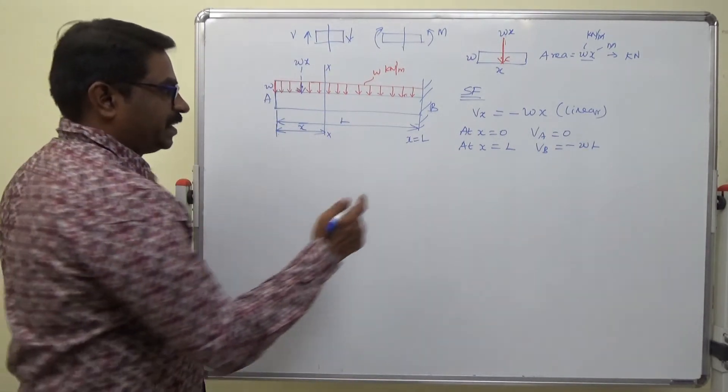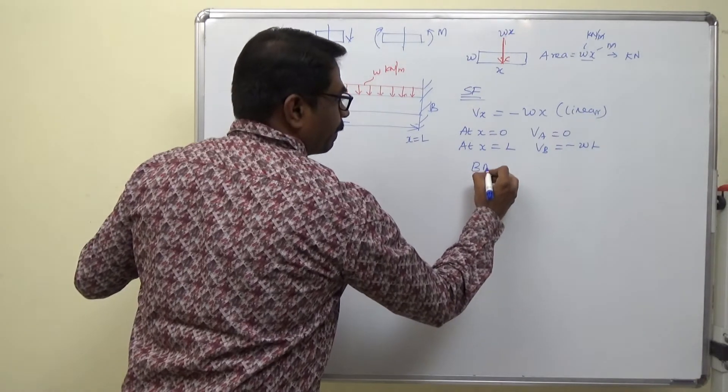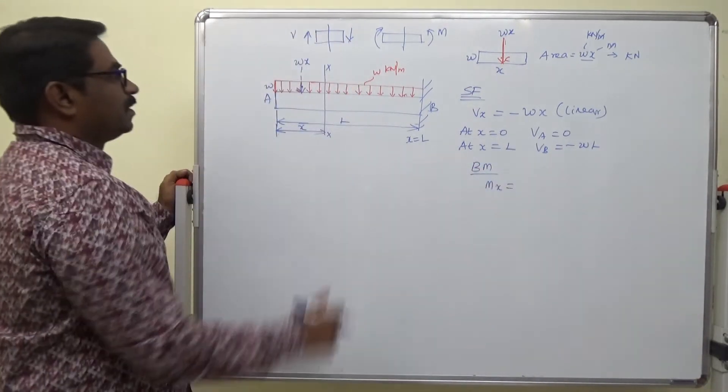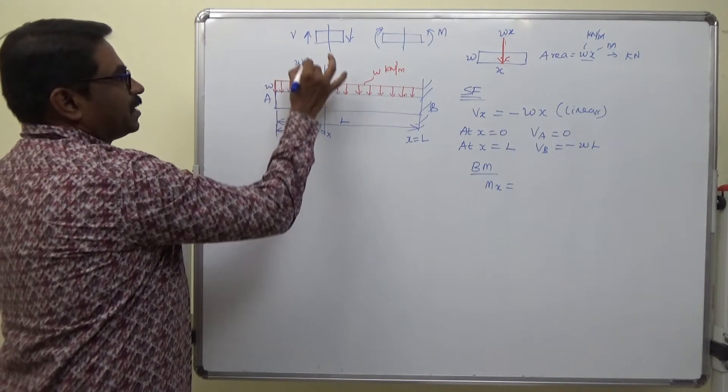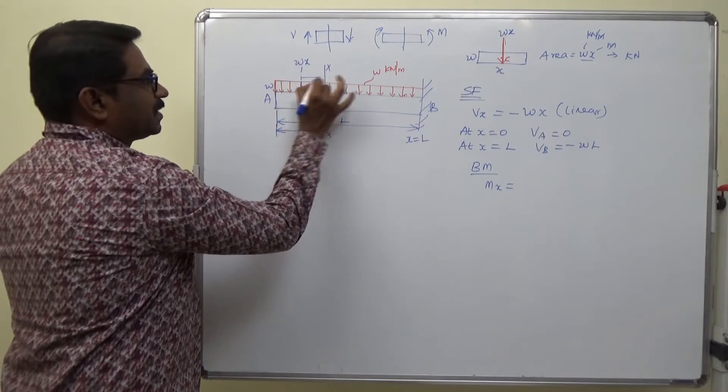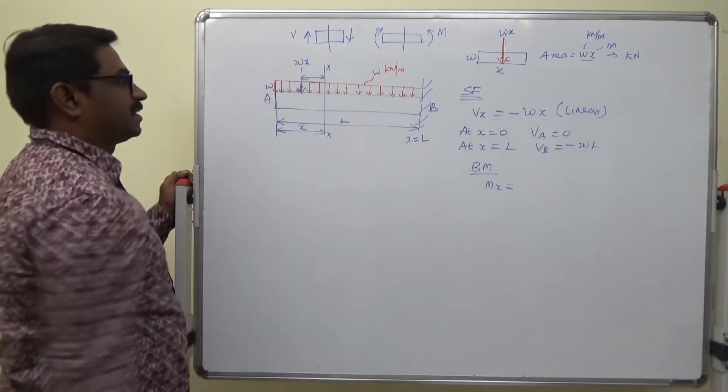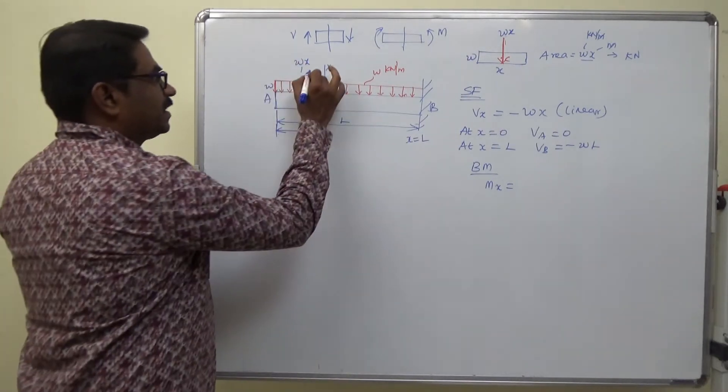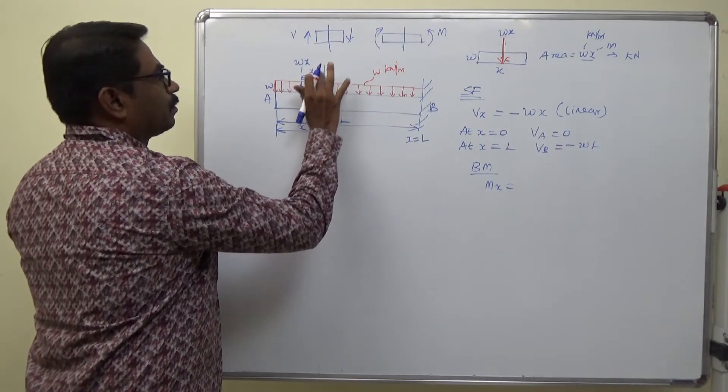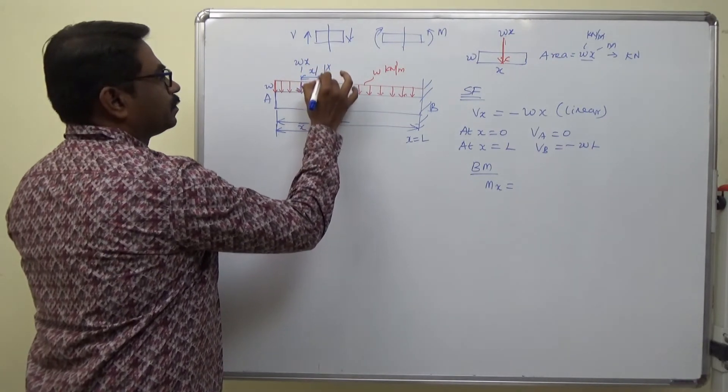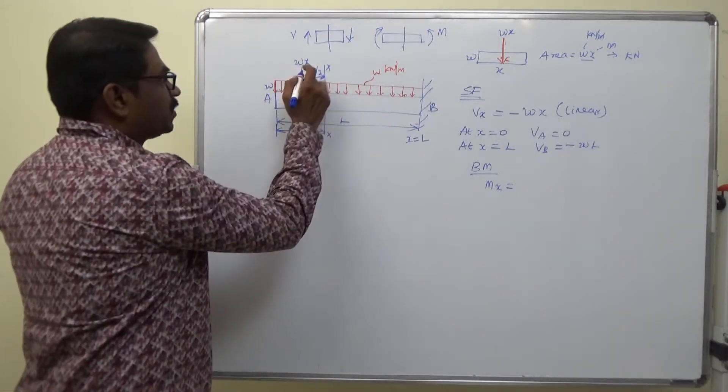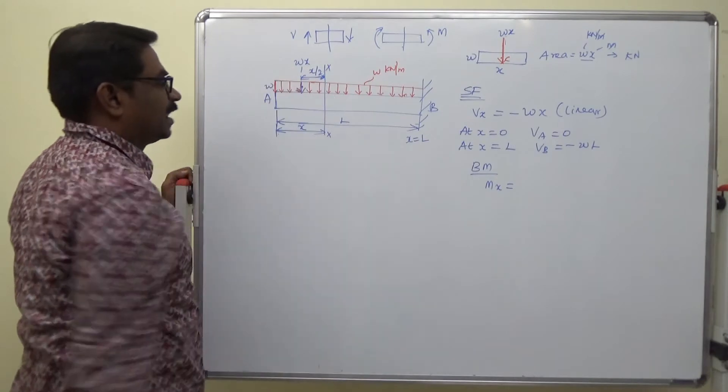Now, the bending moment. M_x equal to... This is the shear force, this is the point load, and the perpendicular distance is given here. It is x by 2.